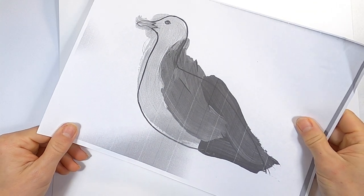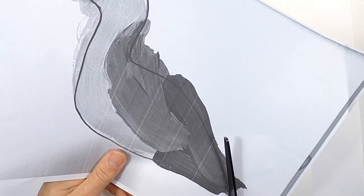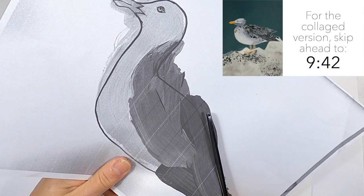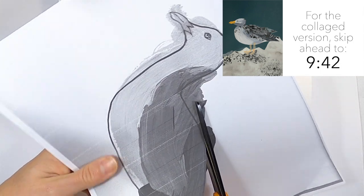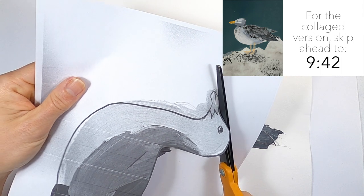In this next step, I'm going to use a silkscreen stencil technique. If you don't have a silkscreen, or this might just be a bridge too far for you, skip ahead to this time stamp for a simpler technique in which I simply cut out and collage the bird.